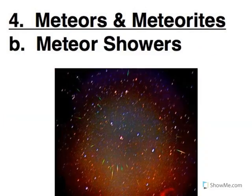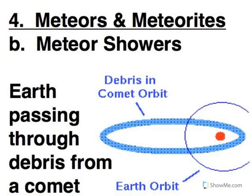Now a meteor shower is very different. Meteors are random, but a meteor shower we can predict. And the reason that we can predict them is because they are associated with comets.